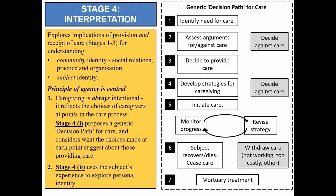Stage four unpacks the implications of both provision and receipt of care in terms of understanding aspects of community, social relations, practice and organization, and subject identity. Caregiving always involves agency — both carers and care recipients choose how they respond to the challenges of disability, which is why care offers such a valuable window into the past. Part one focuses on caregivers, proposes a generic decision path, considers what underlies choices made at each step from identifying the need for care through to the end of care, and includes mortuary treatment as care after death. Part two focuses on the subject — what the experience of disability and care may suggest about them as an individual.